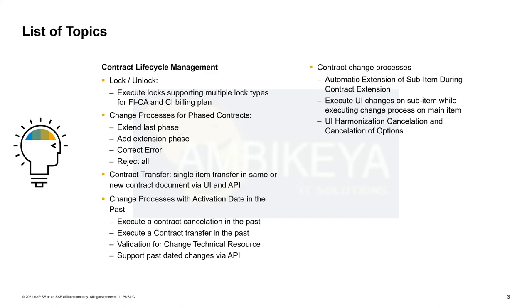There are a lot of new functionalities around contract lifecycle management. The first one is lock/unlock change processes. We have extended our change processes so that you not only lock the FICA provider contract, but based on which lock you are setting you can now define which lock types are set in the FICA and CI processes — for example, setting a dunning lock or an invoicing lock based on the profile you have defined.